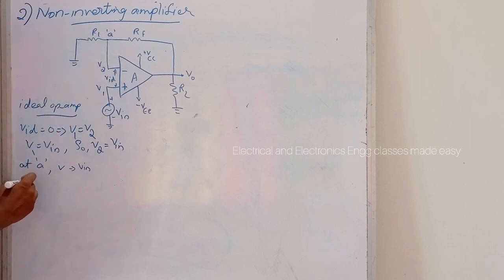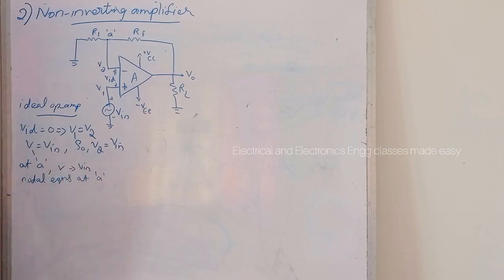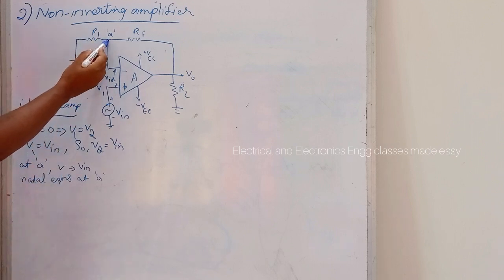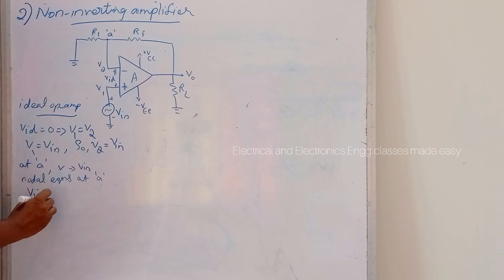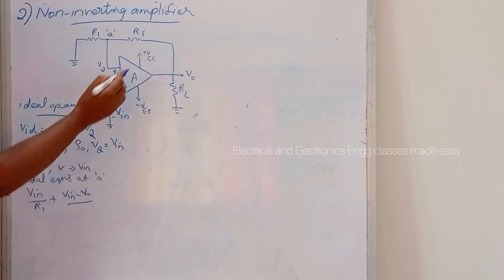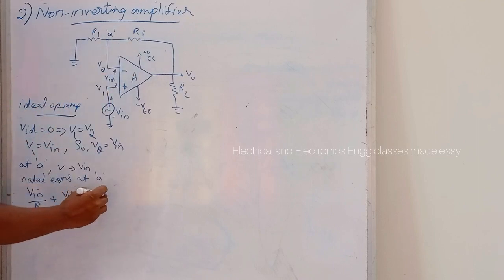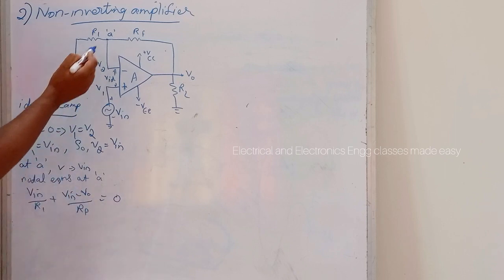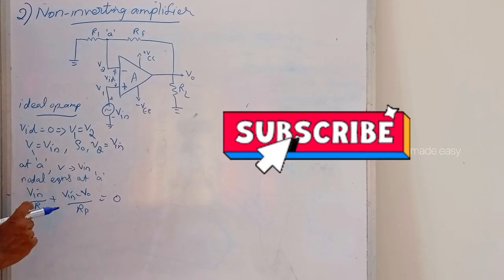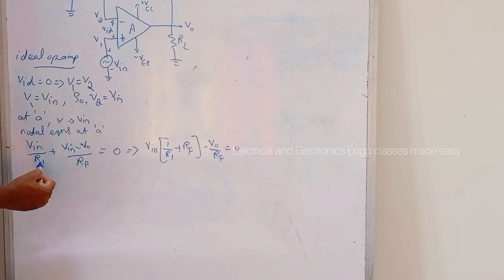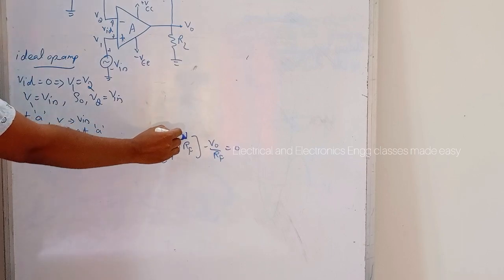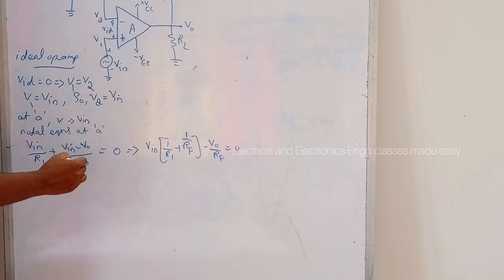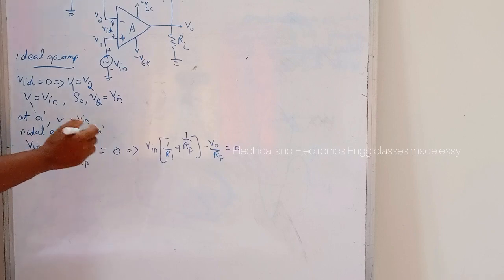Now we write the nodal equations at node A. The nodal equation is: Vin divided by R1 plus Vin minus V0 divided by Rf equals zero. After rearranging: Vin into 1/R1 plus 1/Rf minus V0 divided by Rf equals zero.